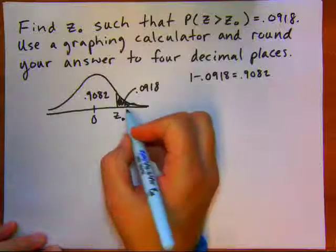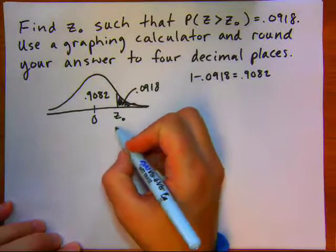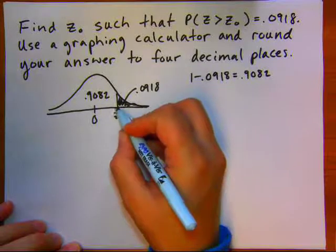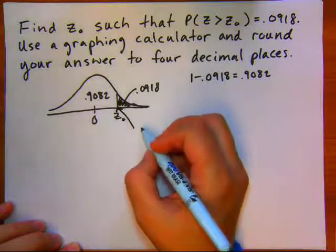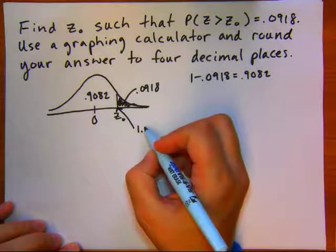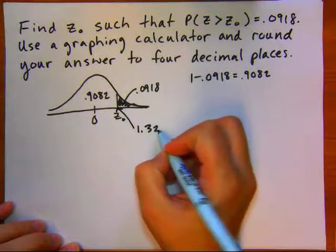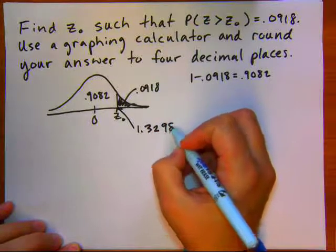We're going back here to our Z-naught in our picture. That value, right there, that gives that top 0.0918 would be equal to 1.3298.